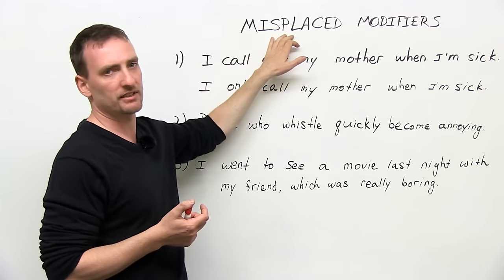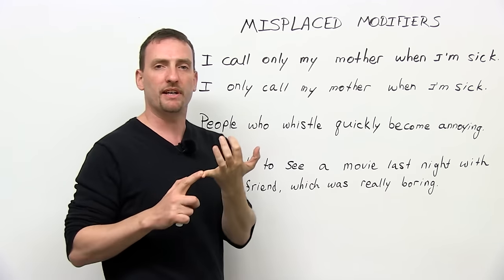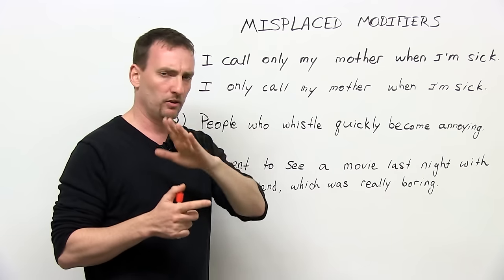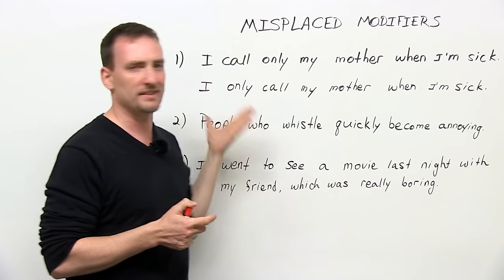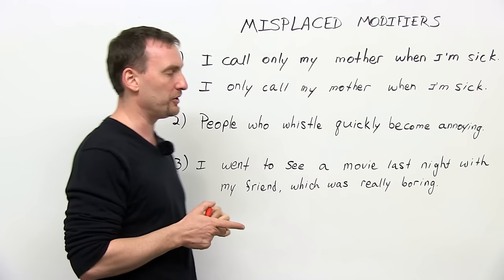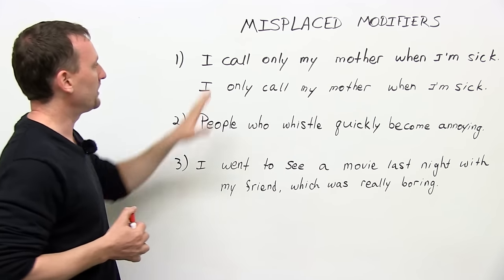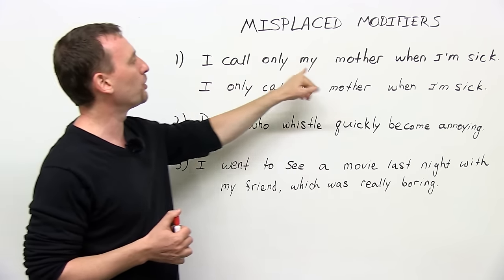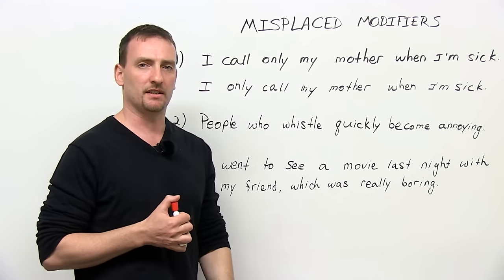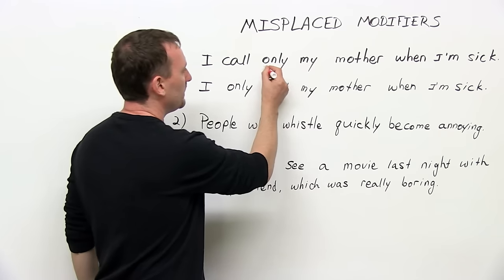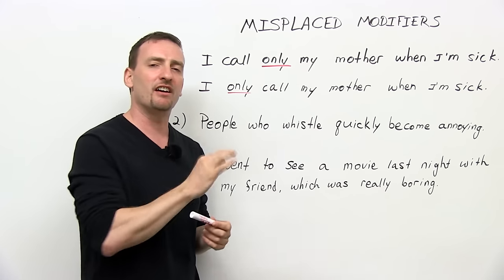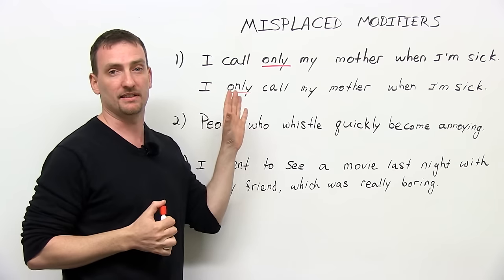So what we're looking at is misplaced modifiers. We have misplaced modifiers, dangling modifiers, squinting modifiers. Don't worry about the technical words — worry about what is actually happening. I'm going to start with these examples and we'll look at a few others in a minute. So look at these two sentences: 'I call only my mother when I'm sick.' 'I only call my mother when I'm sick.' Now this word, 'only,' is the modifier we're looking at. It is very often misplaced.